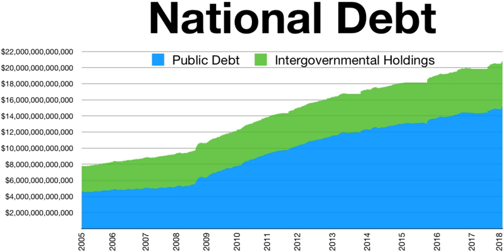The U.S. national debt can be divided between intragovernmental debt and publicly held debt. There are two components of gross national debt. Debt held by the public, such as treasury securities held by investors outside the federal government, including individuals, corporations, the Federal Reserve System, and foreign, state and local governments. Debt held by government accounts, or intragovernmental debt, are non-marketable treasury securities held in accounts of programs administered by the federal government, such as the Social Security Trust Fund.